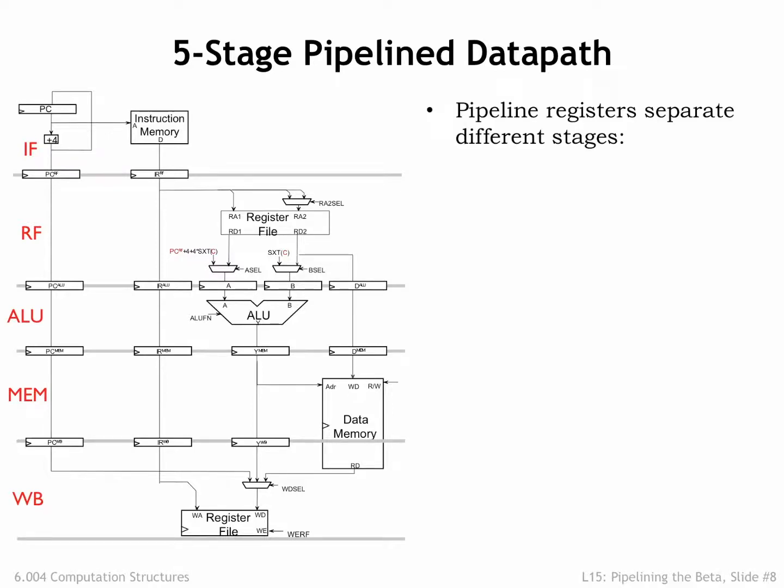The diagram shows the components needed to implement each of the five stages. The IF stage contains the program counter and the main memory interface for fetching instructions. The RF stage has the register file and operand multiplexers. The ALU stage uses the operands and computes the result. The MEM stage handles the memory access for load and store operations. And the WB stage writes the result into the destination register.